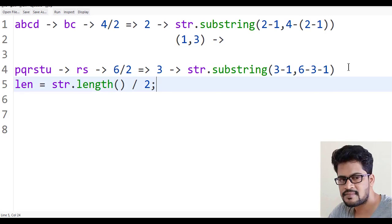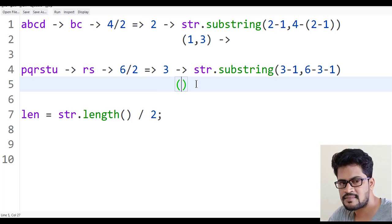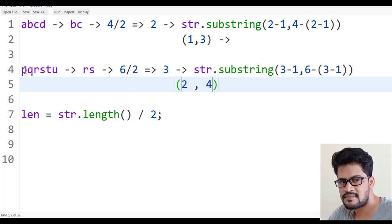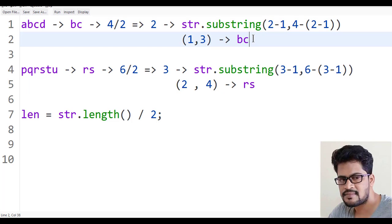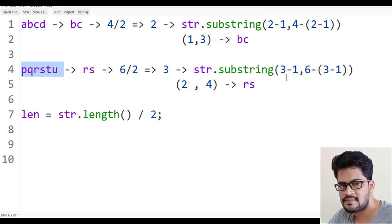So in this case, what happens? Here it will be, 3 minus 1 is 2, so 6 minus 2 is 4. So 2, 4, is that correct? 0, 1, 2, 3, 4. Yes, correct. So you get this answer is RS and here you get the answer is BC. So you should get length by 2. So length minus 1 comma str.length, 6 is the complete length of the string, minus, again length minus 1.